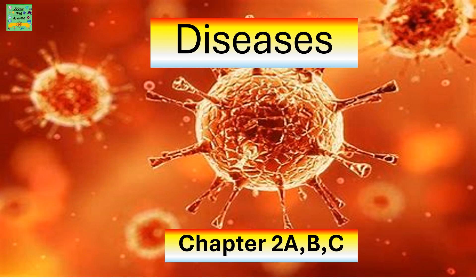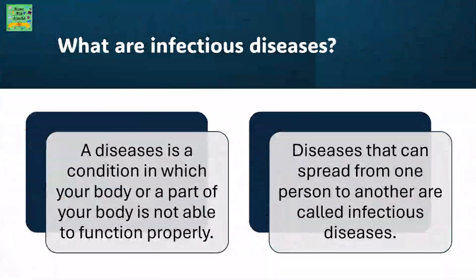Diseases Chapter 2 A, B and C. What are infectious diseases? A disease is a condition in which your body or a part of your body is not able to function properly. Diseases that can be spread from one person to another are called infectious diseases.